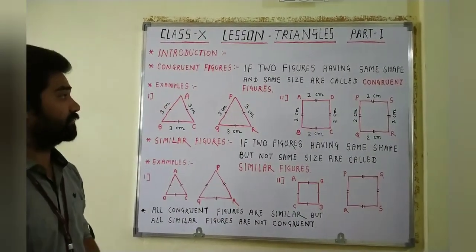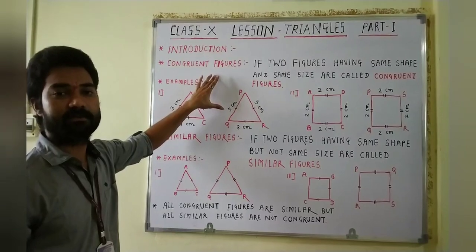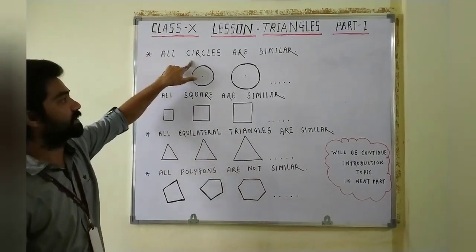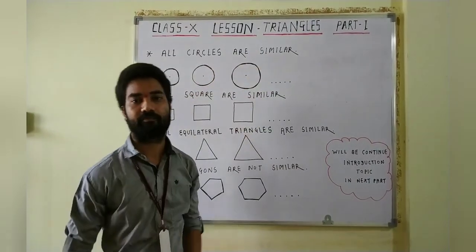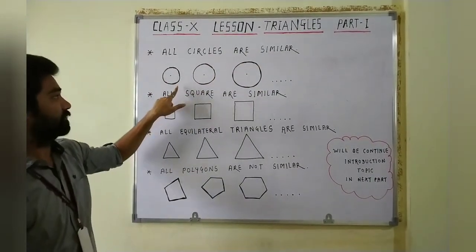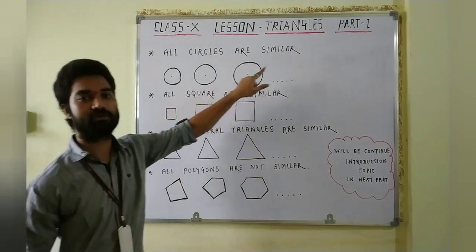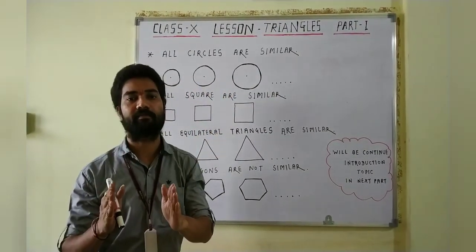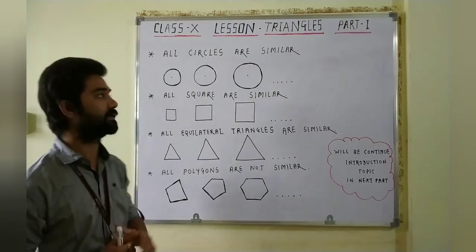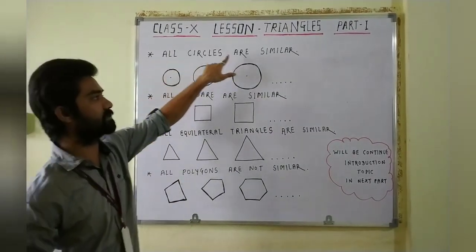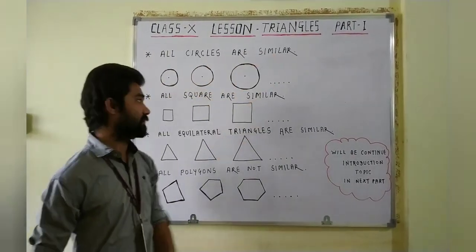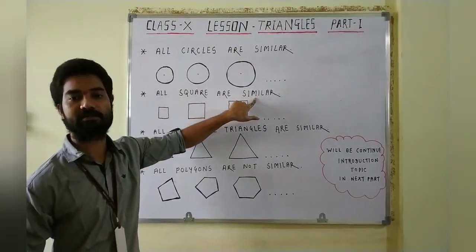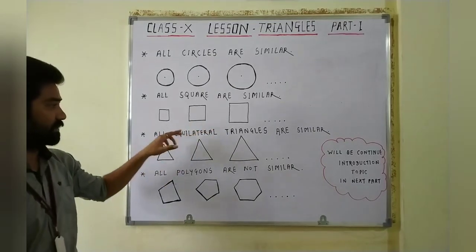Now look at another point. All circles are similar. Here is the first circle, second circle, third circle, and so on. All circles have the same shape but different sizes. That's why all circles are similar. The second point is: all squares are similar. Look at the given squares — first, second, third — all squares have the same shape but different sizes. That's why all squares are similar.